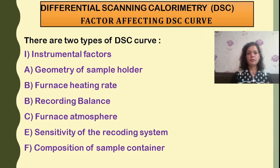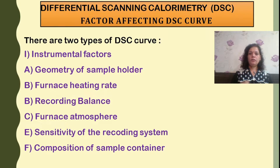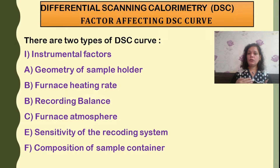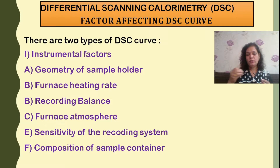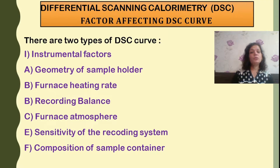Factors affecting DSC curves include instrumental factors such as the geometry of the sample holder, furnace heating rate — whether the sample holder is open, closed, or deep — and the recording balance. The sensitivity and precision of the recording balance matters greatly when measuring the temperature difference between sample and reference. The furnace atmosphere should be inert, but it will also affect the DSC curve.